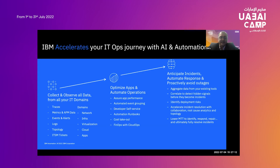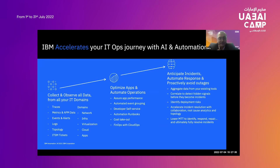The first step in the AIOps journey is being in a reactive zone — monitoring your applications, data centers, and infrastructure. When something goes wrong or a threshold is breached, you want to be notified. This is the first level of maturity. Before going into further detail, let's understand the AIOps terminology.